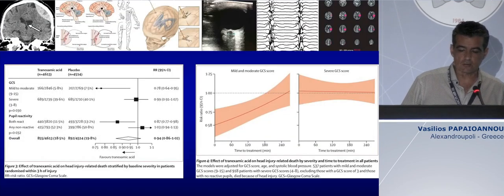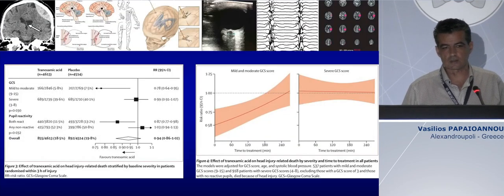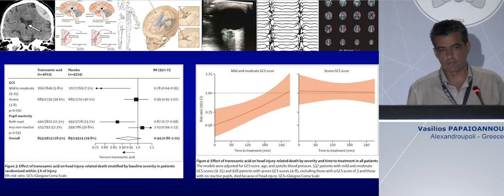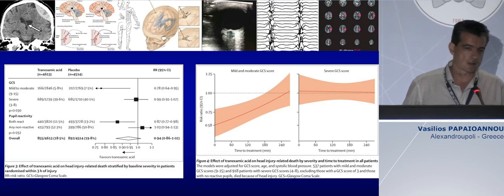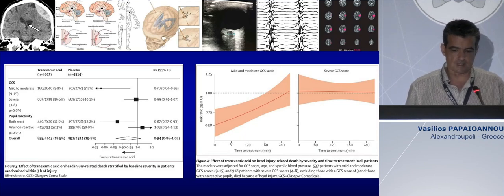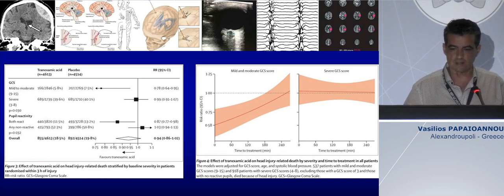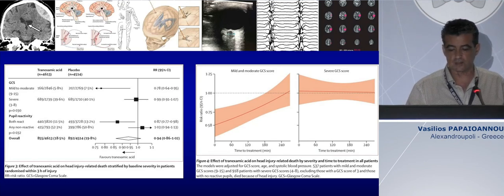The CRASH-3 trial was published in 2019, including many thousands of patients with mild, moderate, and severe TBI. It showed that only in patients with mild and moderate TBI, tranexamic acid — the earlier the better — could have a favorable impact upon outcome, whereas patients with severe TBI were not actually affected by the administration of tranexamic acid.